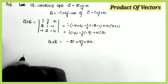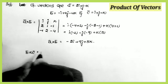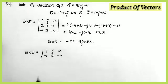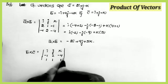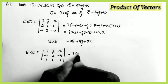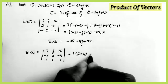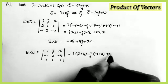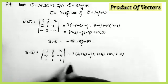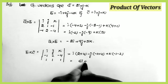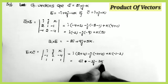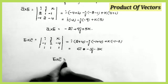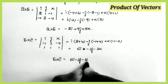Now finding b×c. Setting up i, j, k with b = (−1, 2, −4) and c = (1, 1, 1). Computing: i(2×1 − (−4)×1) = 2 + 4 = 6; −j((−1)×1 − (−4)×1) = −j(−1+4) = −3j; k((−1)×1 − 2×1) = −3k. Therefore b×c = 6i − 3j − 3k.